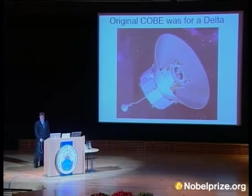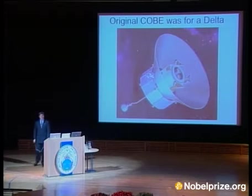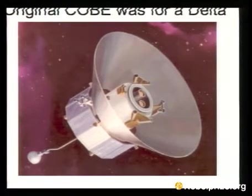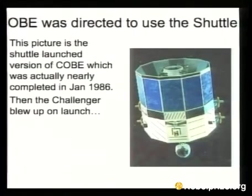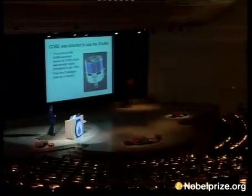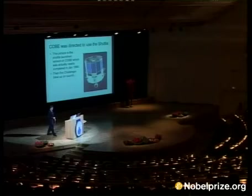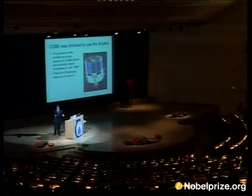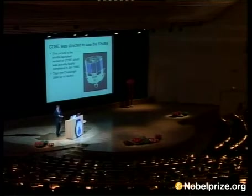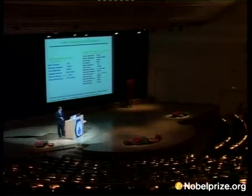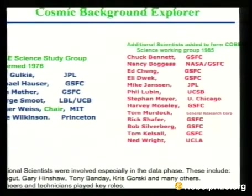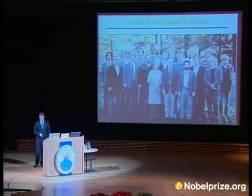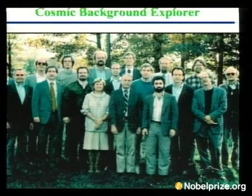We'll turn to COBE and talk about the Differential Microwave Radiometer. The original COBE was for a Delta rocket — something we don't mention very often. Then we were ordered by NASA to use the Shuttle — that was the policy — and you'll notice it's a very different, much bigger design. The Challenger blew up on launch in 1986, and we were almost all ready. We had all our equipment built into the DMRs, ready and starting to be tested, and we had to take them apart and redesign. As John said, we had to lose half the weight. The COBE science team study group started in 1976, and then we added approximately 85 people. Later on, we added a large number of other people involved in helping get the project ready, particularly in the data analysis.